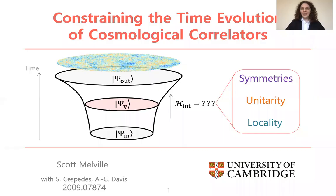It's great to see you all virtually at this lovely workshop. I'm delighted to be talking about the time evolution of cosmological correlators, namely the problem of how the initial state of the universe, the beginning of inflation, evolves under the action of some Hamiltonian to produce the correlated fluctuations that we see in the CMB and large-scale structure.